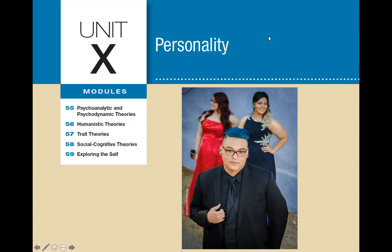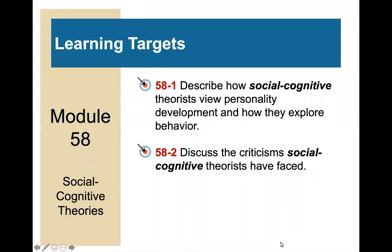Hello, welcome to Unit 10, Personality, Module 58, Social Cognitive Theories. This aligns with Myers Psychology for the AP course, third edition. The slides go with the textbook. This is a rather short module with only two learning targets: to describe how social cognitive theorists view personality development and how they explore behavior, and to discuss the criticisms of social cognitive theorists and how they face them.